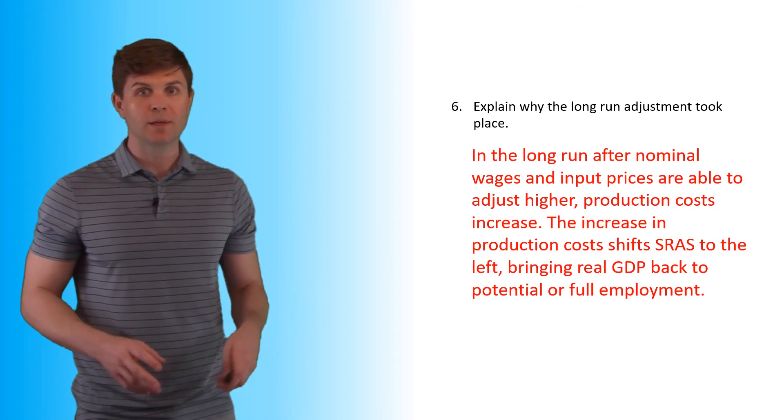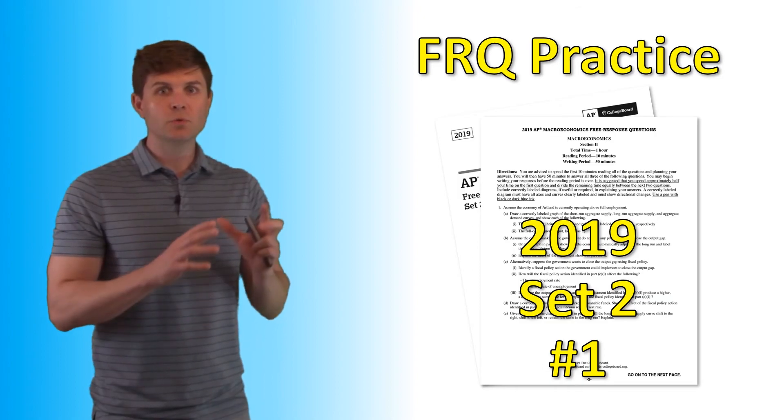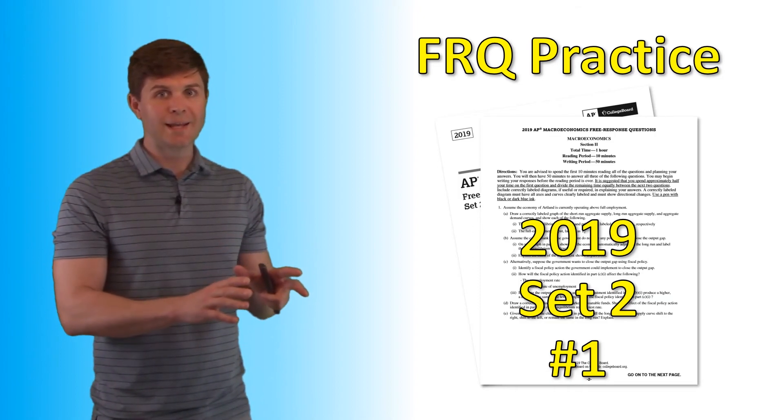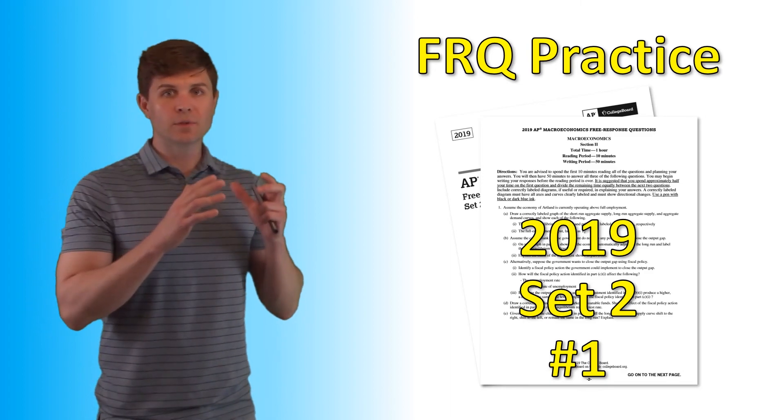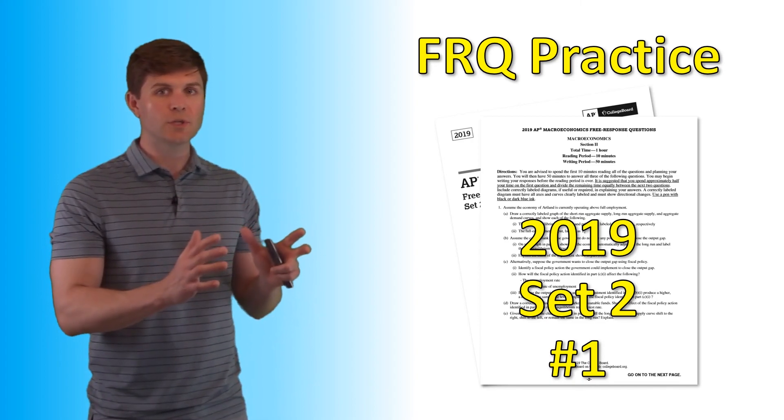If you want a little extra practice in terms of FRQs dealing with the long run adjustments, I suggest taking a look at the 2019 set two question number one. This one is a longer question dealing with a lot of other things, but there is a part of it that deals with the long run adjustment.